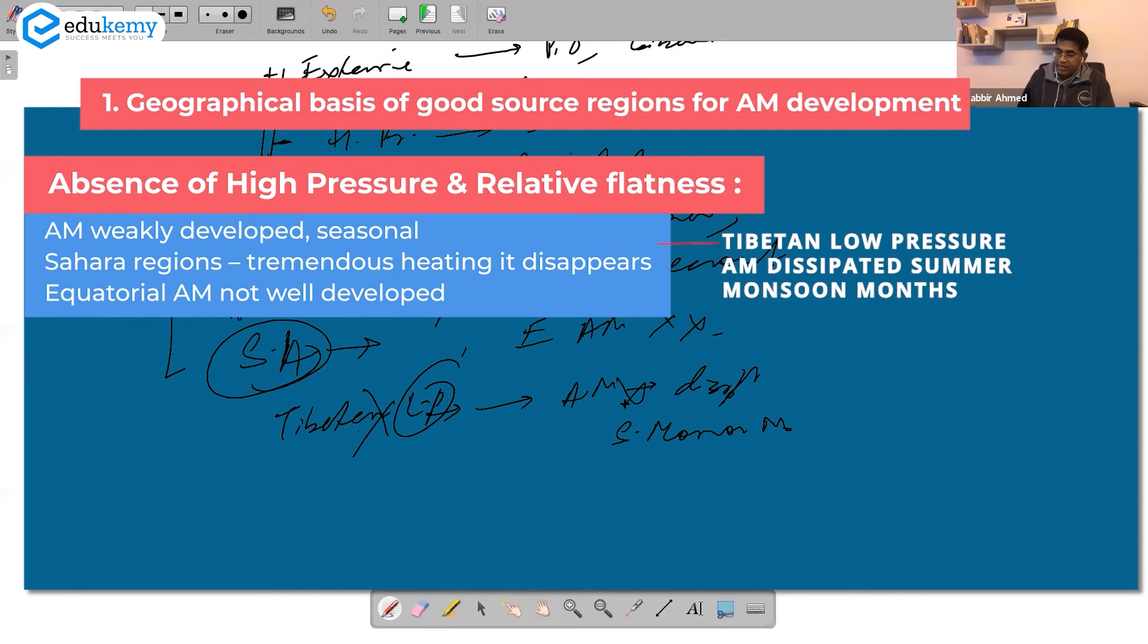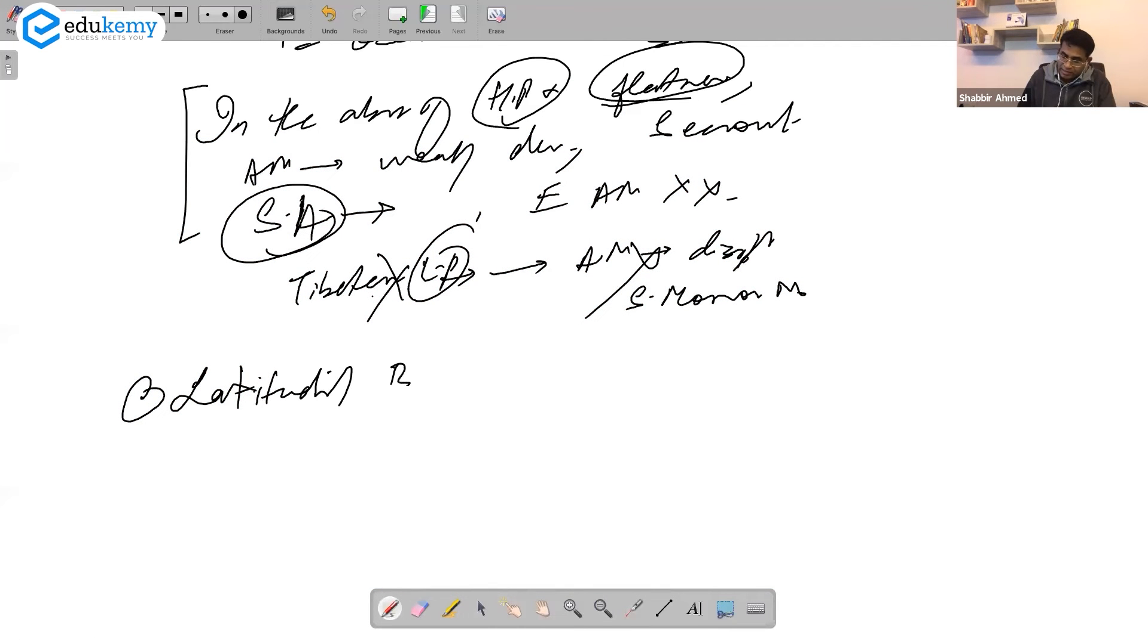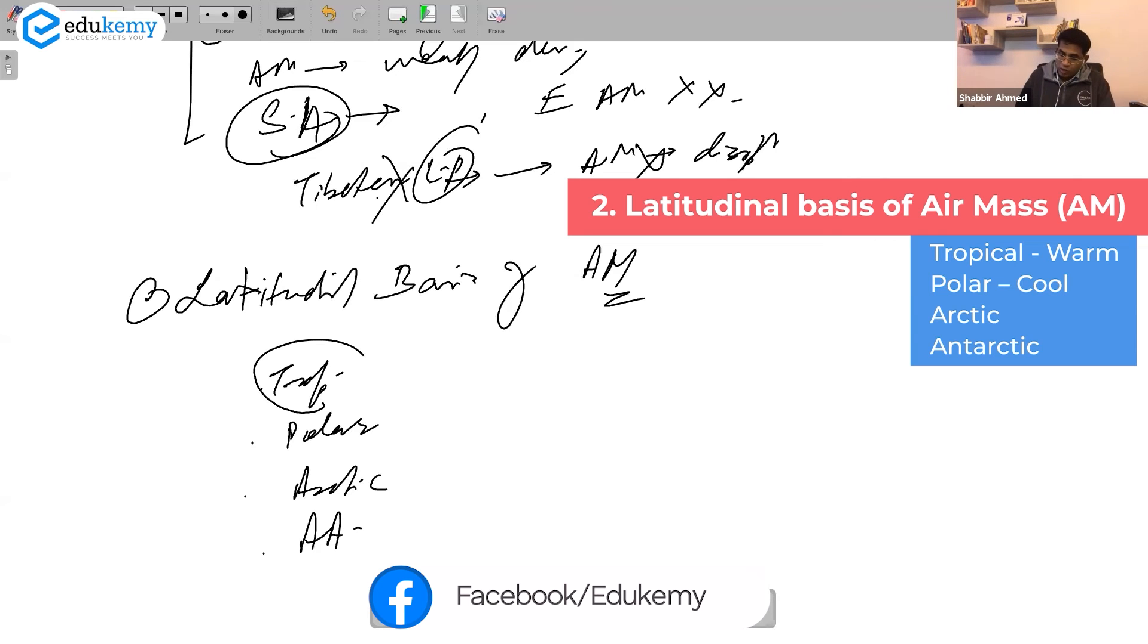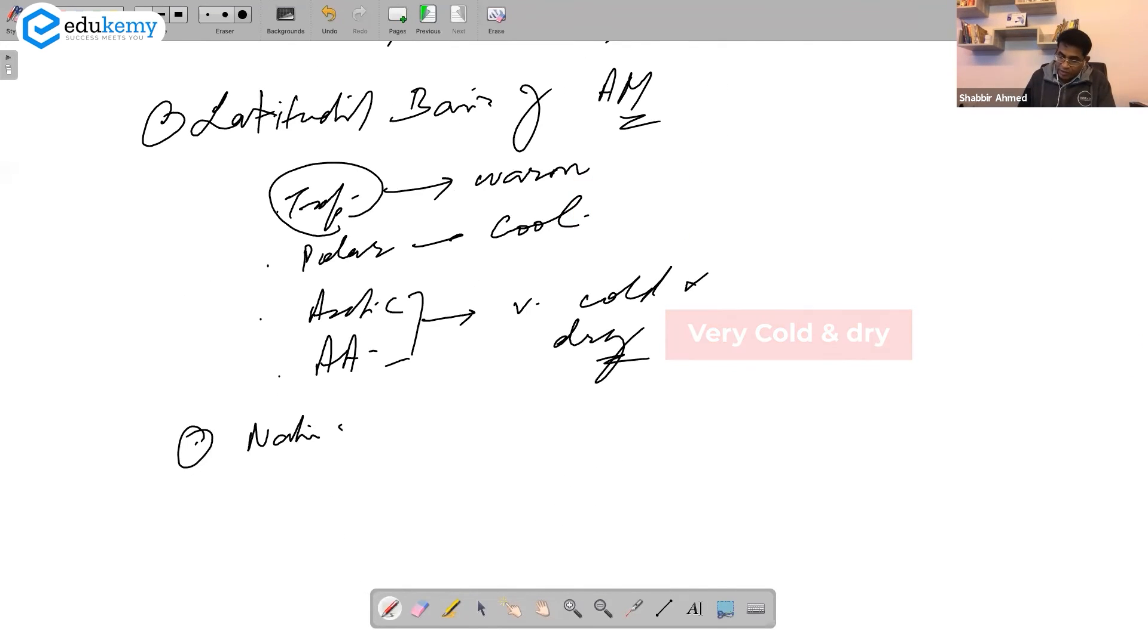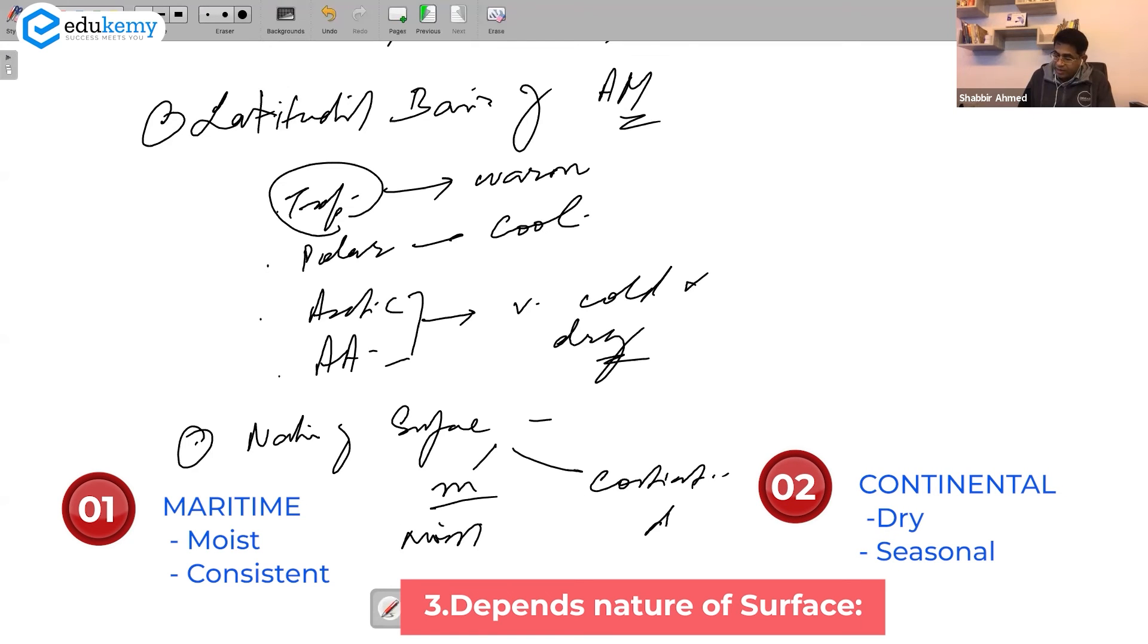Then you will move on towards the latitudinal basis of air masses. You can talk about tropical, polar, arctic, antarctic. Tropical ones in general are warm. Polar are cool. Arctics are very cold and dry. And it also depends on the nature of the surface - whether it is maritime or continental. These are moist and these are dry. These are more consistent, these are mostly seasonal.